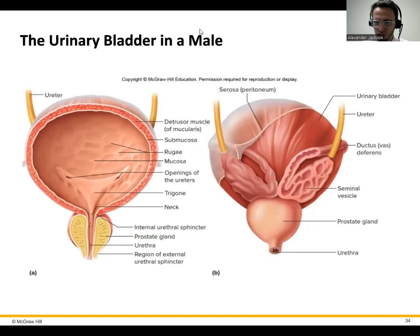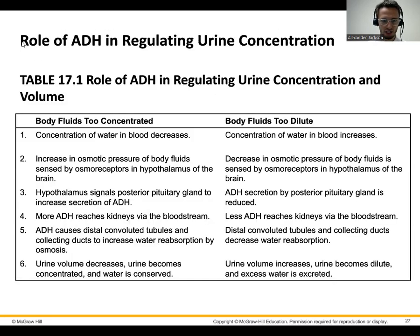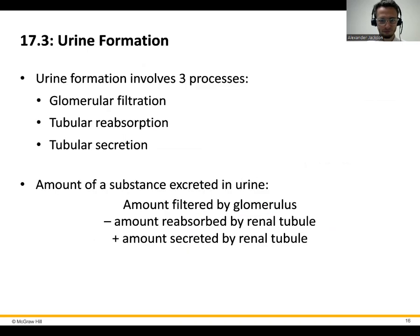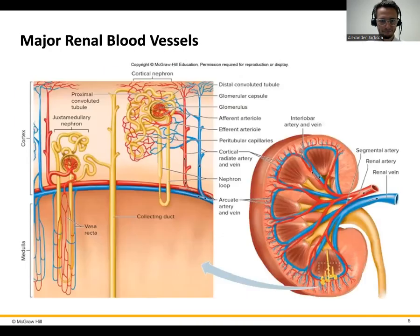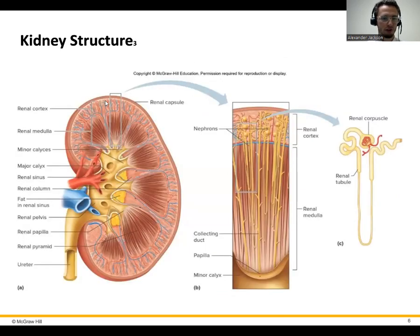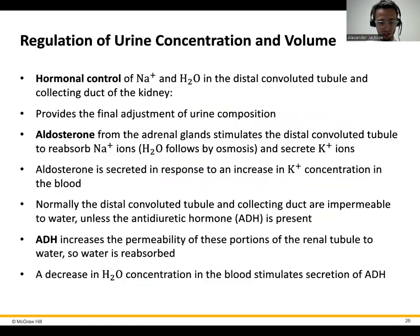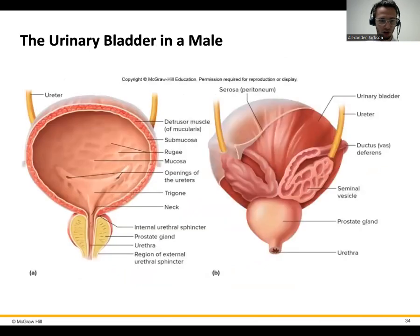Here's the urinary bladder. Once all these tubules do their filtering, the urine is going to pass down through the collecting duct and eventually get to these calyces — the minor and major calyces — and then pass through to the ureter. Once it's in the ureter, it will be stored in the urinary bladder before we urinate it out. We can't reabsorb things once it's in the ureter.